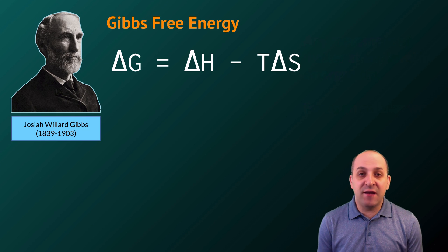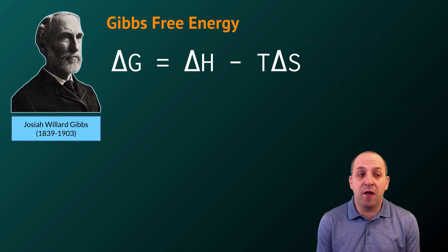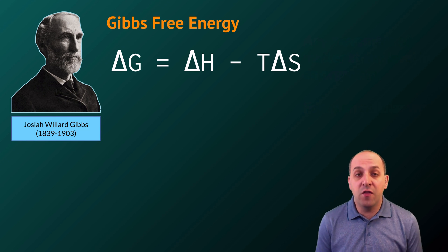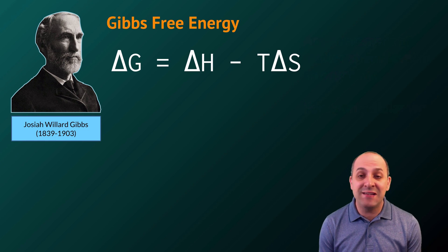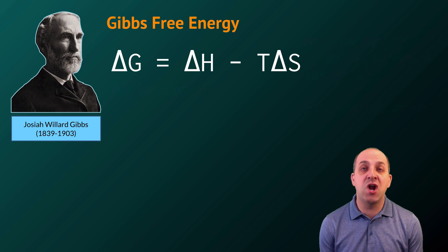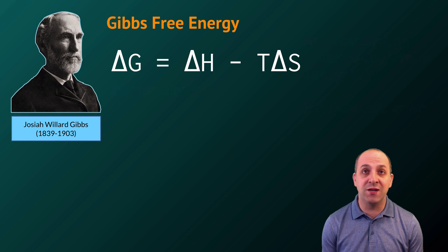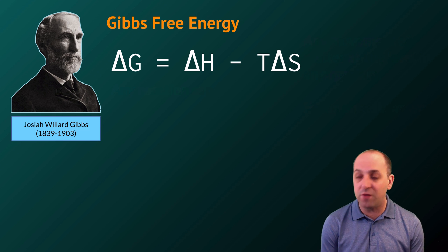Free energy can be investigated quantitatively, and in order to do that we use a formulation first developed by Josiah Willard Gibbs in the 1800s: the notion of Gibbs free energy, which is stated as ΔG = ΔH − T·ΔS. You have this equation on your formula sheet and you can see that all of these terms are defined there.